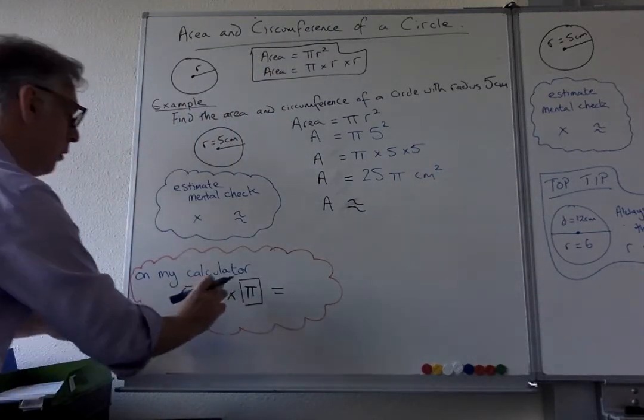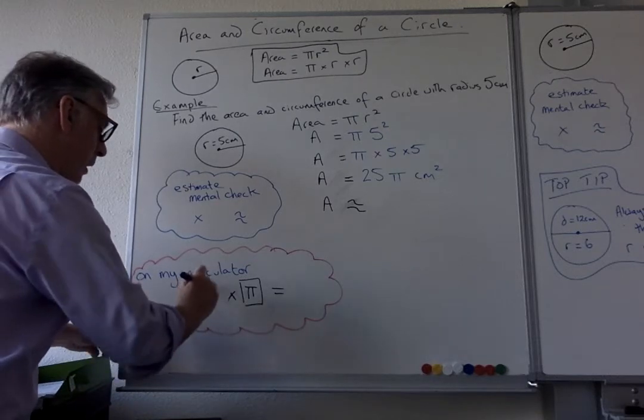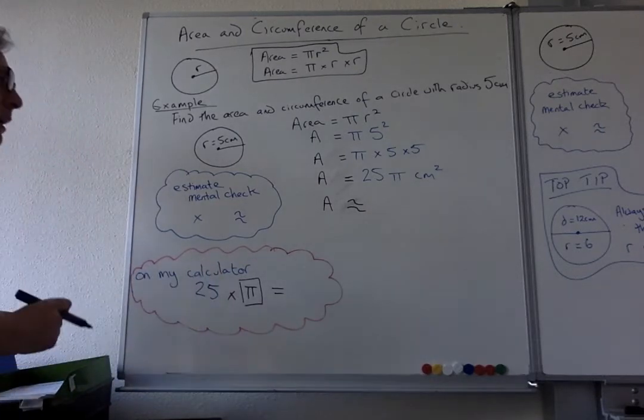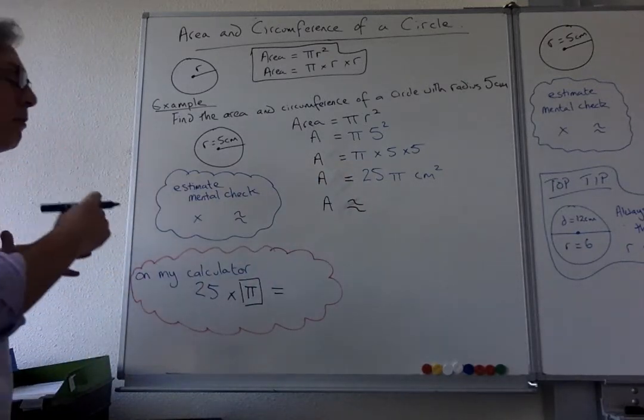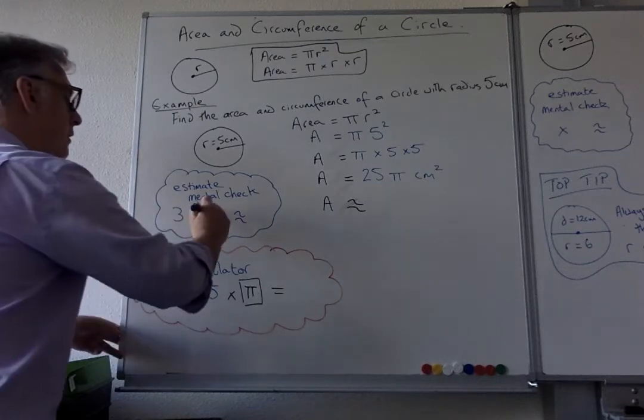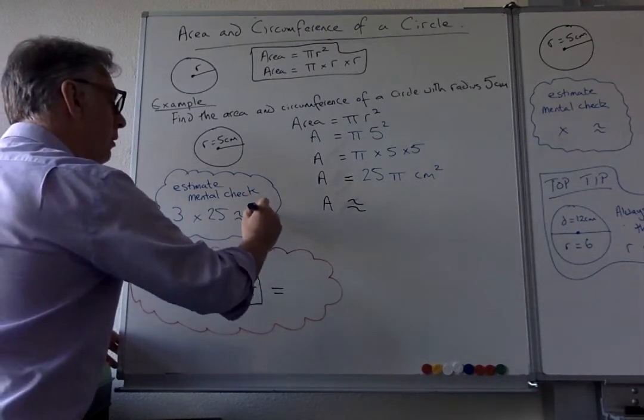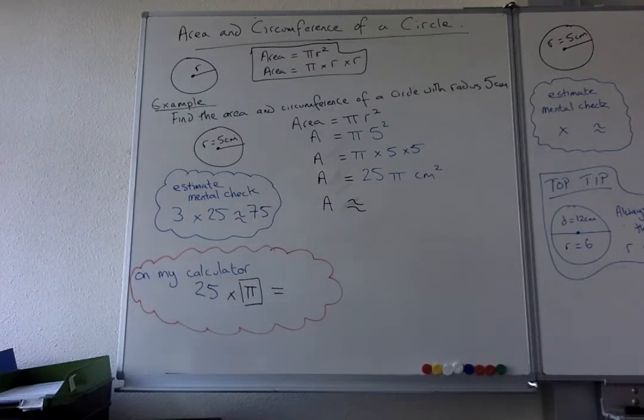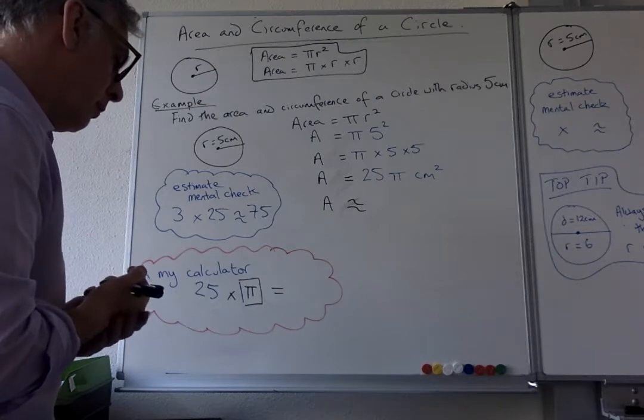Now we're going to use a mental check to think about what the answer could possibly be. So π is 3 point and a little bit more, so we're going to use 3 as an estimate for π. I'm going to times it by 25. 3 times 25 is of course 75. So I'm looking for a number around that, and this means approximately because we're going to round to a certain number of decimal points.